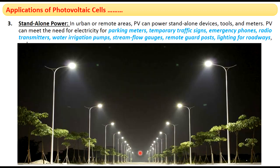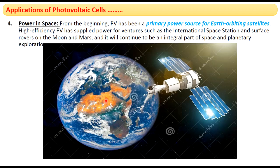Another application is lighting for roadways — roads are well lit with lights that run on solar panels. Another application is earth-orbiting satellites. Satellites which revolve around the earth or other planets run with solar panels, as you can see in the picture of a satellite revolving around the earth.